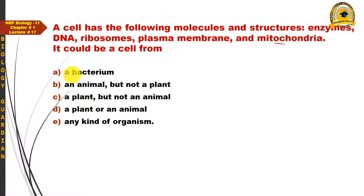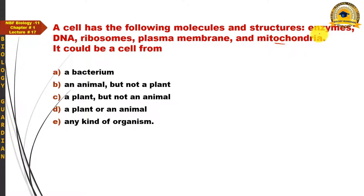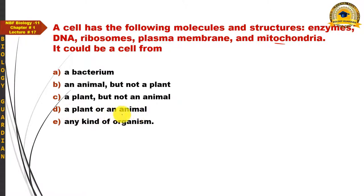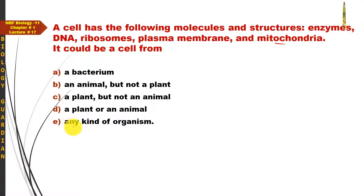For the MCQ asking what type of cell contains mitochondria: it cannot be a bacterium because bacteria lack mitochondria. Mitochondria are found in both plant and animal cells, so options saying 'animal but not plant' or 'plant but not animal' are incorrect. The most suitable answer is that it could be a plant or animal cell — option D. 'Any kind of organism' is incorrect because bacteria are excluded.